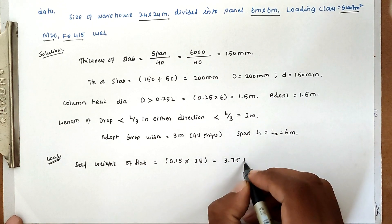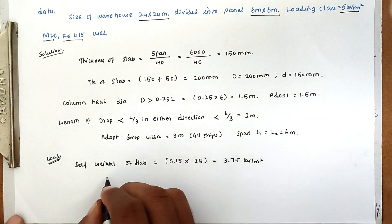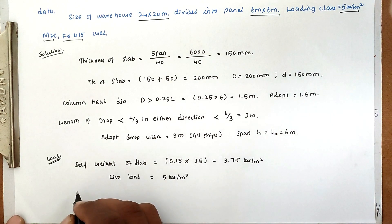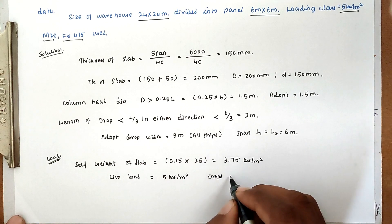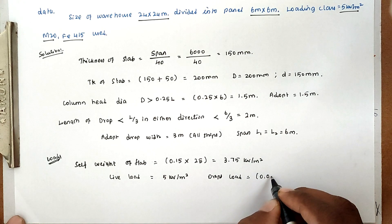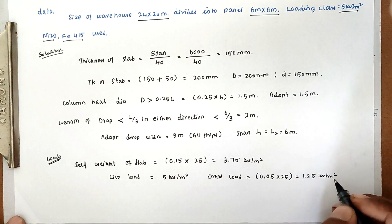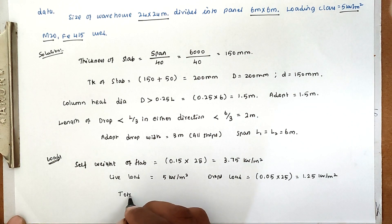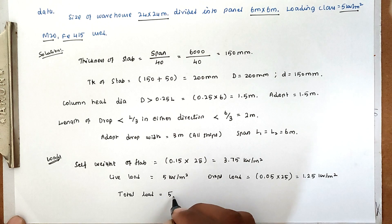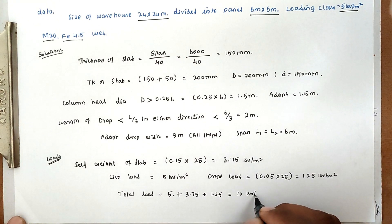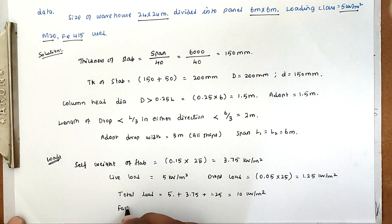Self weight of slab equals 0.15 (thickness) into 25 (unit weight of concrete) equals 3.75 kN per meter square. Live load is given as 5 kN per meter square. Load due to extra depth on drops equals 0.05 into 25 equals 1.25 kN per meter square. Total load equals 5 plus 3.75 plus 1.25 equals 10 kN per meter square.